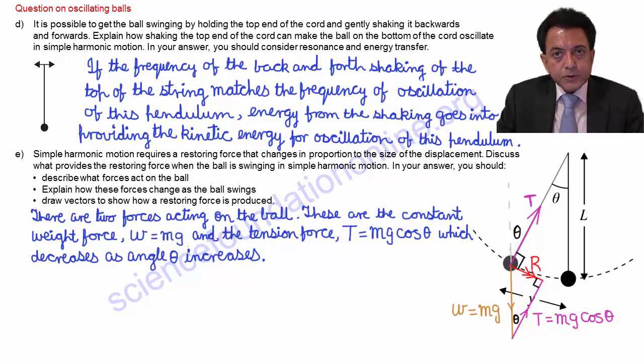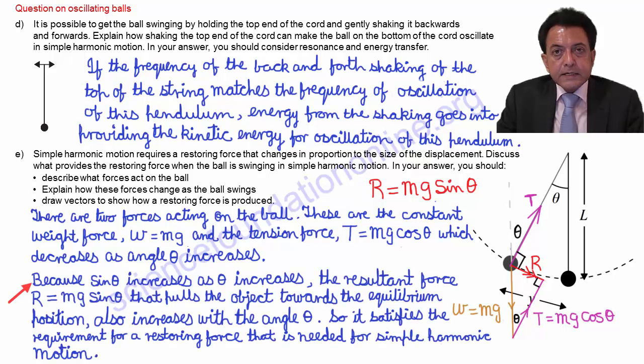From our vector triangle, we can also see that the resultant force R acting tangential to the circular path is mg sin theta. Because sin theta increases as theta increases, the resultant force R that pulls the object towards the equilibrium position increases with the angle theta. So it satisfies the requirement for a restoring force needed for simple harmonic motion.